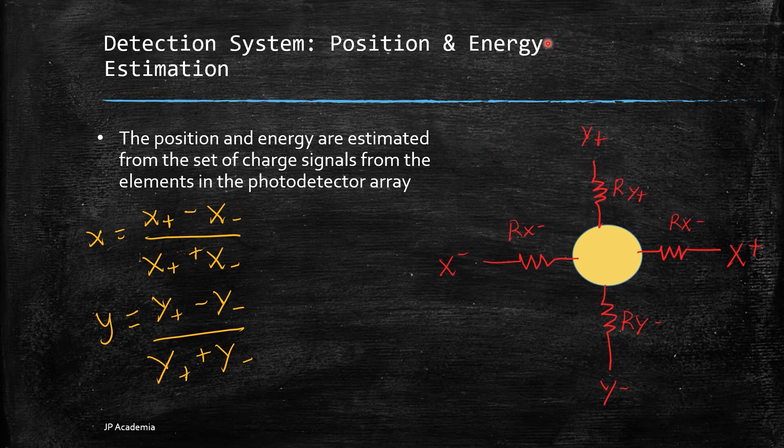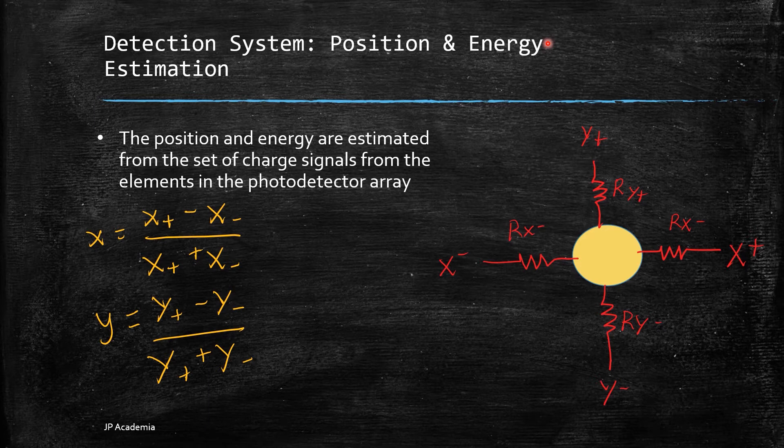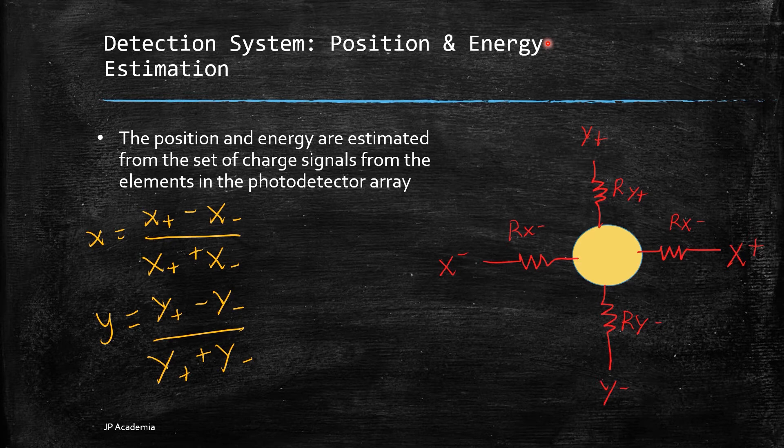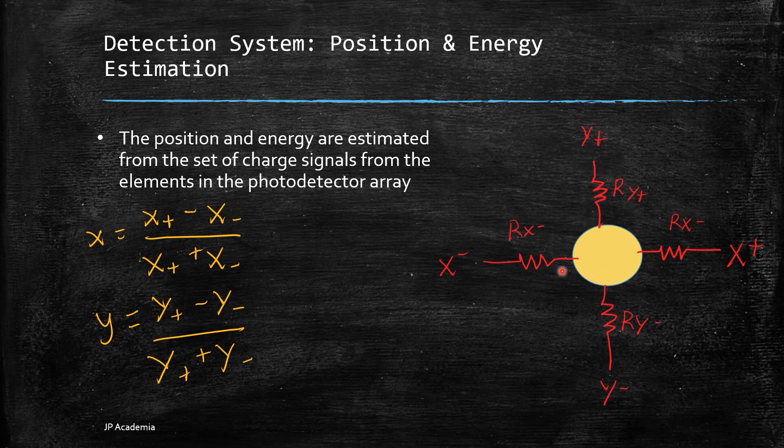In early gamma cameras, the computations above were performed using analog circuits. In current systems, the computations are performed digitally. However, this equation does not perfectly map the source position given that our PMT signal does not actually vary linearly.